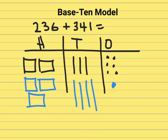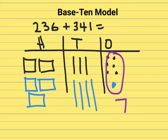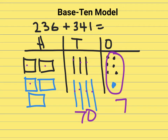I'll start with the ones. In this area I have seven. In the tens I have 10, 20, 30, 40, 50, 60, 70. And in the hundreds I have 100, 200, 300, 400, 500.